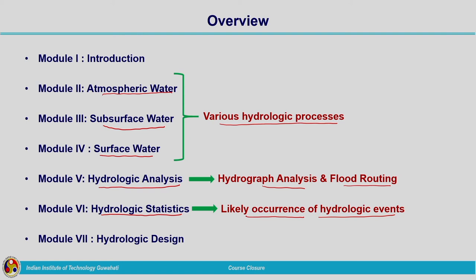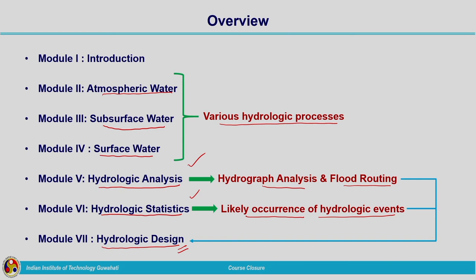After that, we moved on to the last module — the seventh module on hydrologic design. Hydrologic design makes use of information from both hydrologic analysis and hydrologic statistics as its input. For carrying out hydrologic design, we need understanding of hydrologic analysis and inputs from hydrologic statistics — that is, statistical analysis carried out based on past data to estimate the possible magnitude of a particular hydrologic event, which must be incorporated while carrying out hydrologic design.